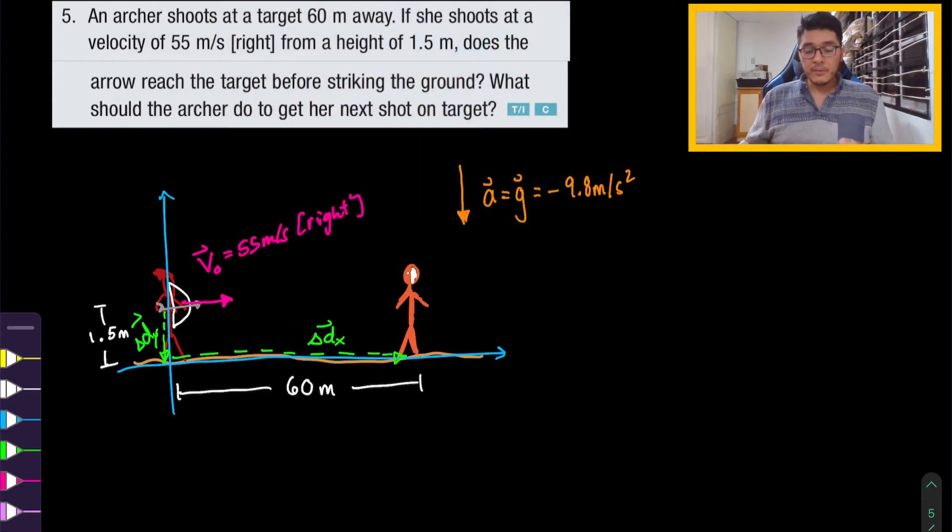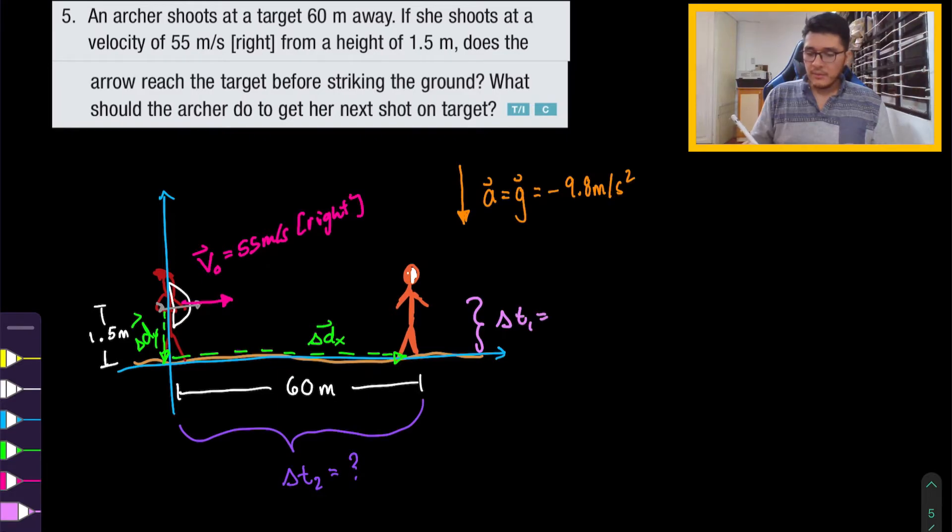Now the main part to this question, as I was mentioning before, we want to compare time intervals. So we want to compare the time interval that it takes to fall 1.5 meters, and we're going to compare that to the time interval to travel 60 meters. So we're doing a time comparison. So let's call this delta t2, which is our unknown, and delta t1 is our unknown as well, for the y component and the x component.